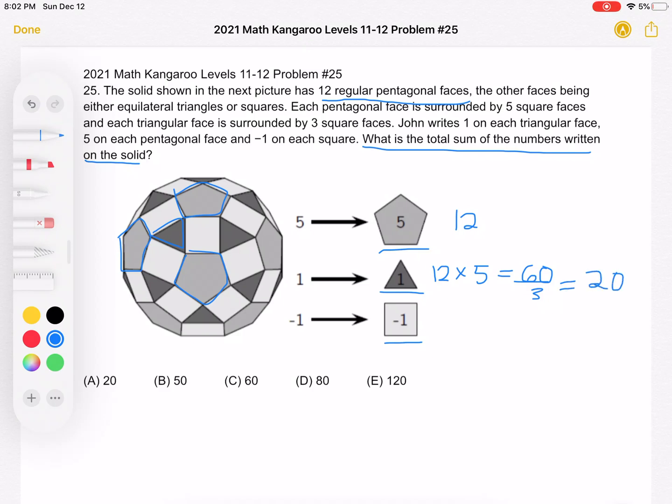Now let's count the number of squares. We're going to use a similar method. So for each pentagon, we have 1, 2, 3, 4, 5 squares that have a side in common with it.